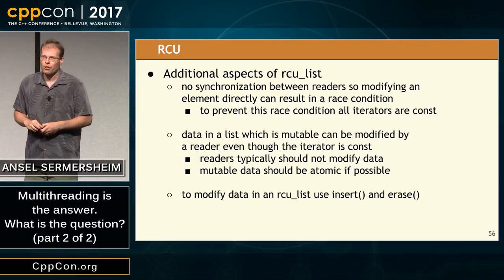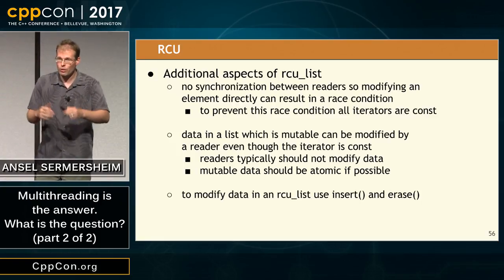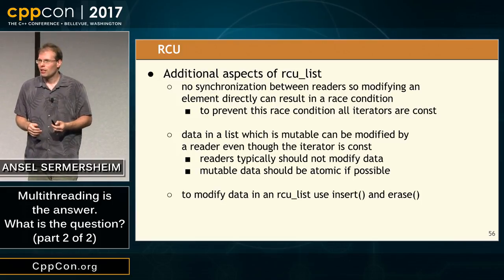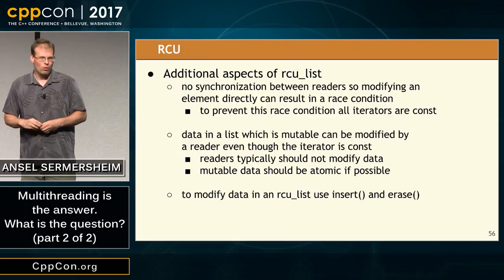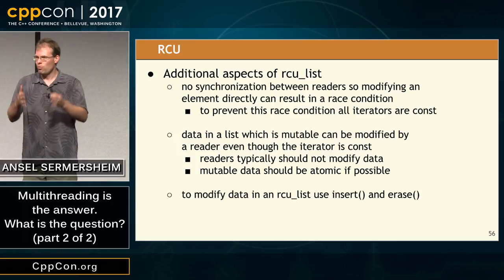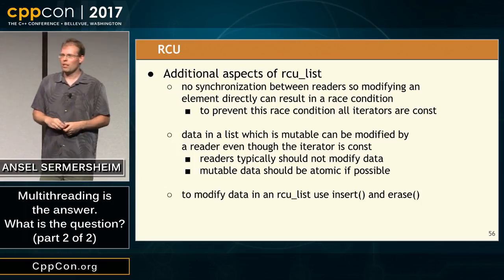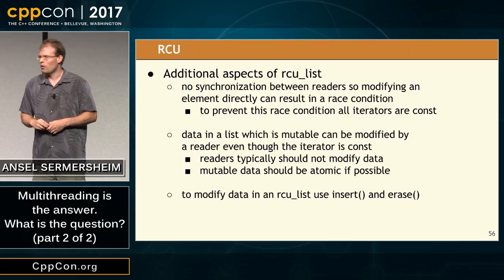There's no synchronization between readers, so modifying the data in an element of this list could result in a race condition. Therefore, all iterators are const — this prevents race conditions unless you have mutable data in your elements, which is a bad idea. In order to modify data in an RCU list, use insert and erase. You shouldn't ever modify elements directly — if you see a const iterator and think 'let me just make my data mutable to get around it,' you will shoot yourself in the foot.